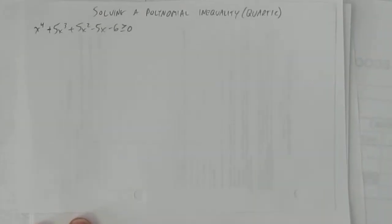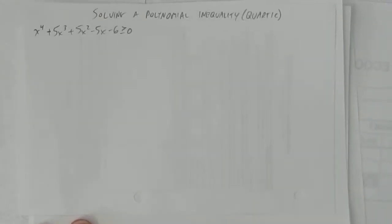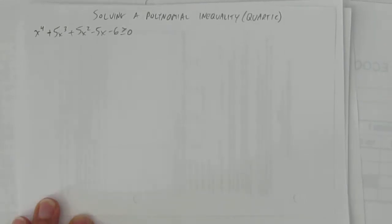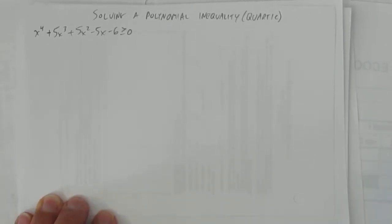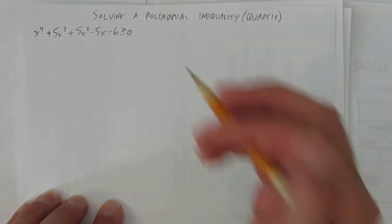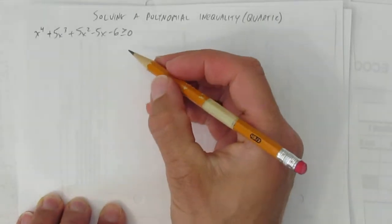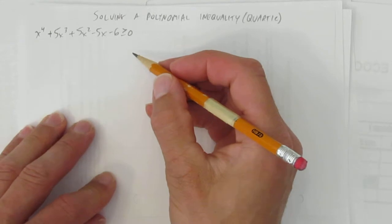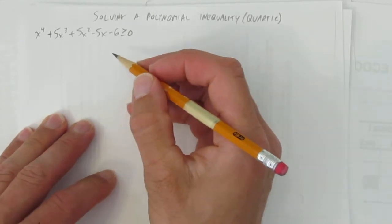In this video, we'll be solving a polynomial inequality that's quartic. The inequality we're given is x to the power of 4 plus 5x to the power of 3 plus 5x squared minus 5x minus 6 is greater than or equal to 0. Let's get started.